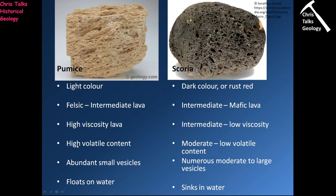In the case of pumice, we have a very high volatile content, so there are lots and lots of gas bubbles. Mafic magmas tend to have a much lower volatile content, so we'll typically have a lower vesicle count in scoria. Pumice has abundant small vesicles because each individual gas bubble didn't have time to merge together to form larger ones — the lava is very sticky. In contrast, in mafic lava, gas bubbles can move through quite easily due to the low viscosity, so smaller bubbles aggregate together to form large bubbles. You can see noticeably larger vesicles in scoria compared to pumice, and that's a reflection of magma viscosity.